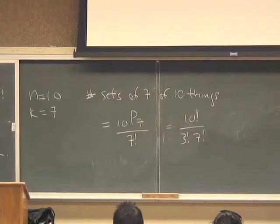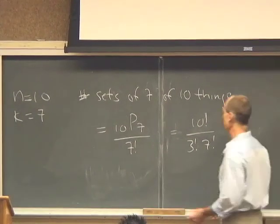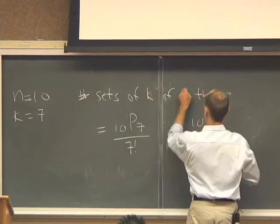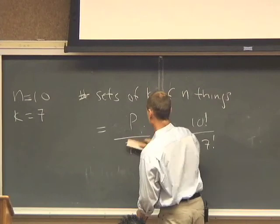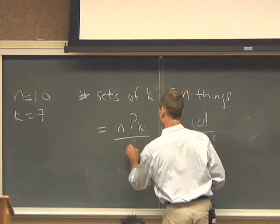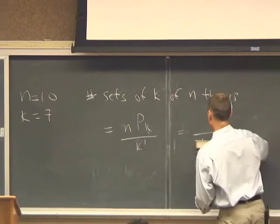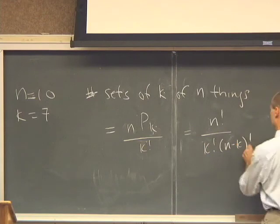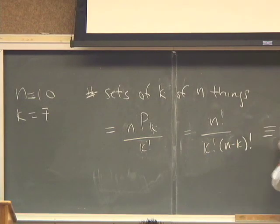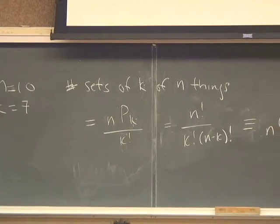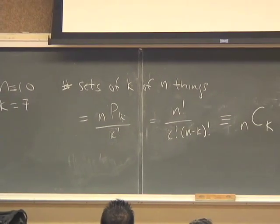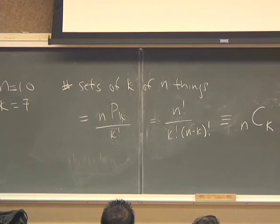And in general, this reasoning holds, and the number of sets of k of n things is going to be n pk over k factorial, which is n factorial over k factorial times n minus k factorial. And we give this a symbol, which is n choose k. That's the number of combinations of n things taken k at a time, the number of subsets of size k taken from a population of size n.